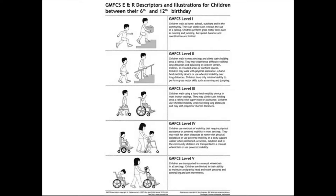This is an example of one of the age bands of the GMFCS, showing descriptors and illustrations for children between age 6 and 12, going through what you would see for levels 1 through 5. A full copy of the Gross Motor Function Classification System, extended and revised — the GMFCS-E&R, second edition — has been posted, so you can look through the descriptors for each level at each age range.